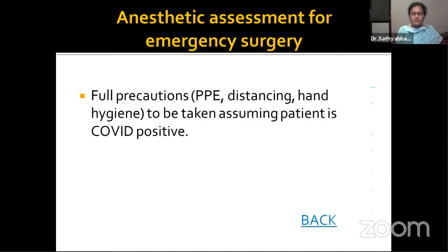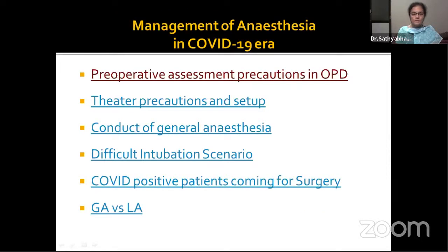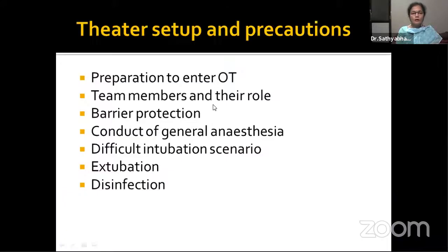The pre-anesthesia checkup for emergency surgery patients is done with full precautions because of the absence of a COVID report. COVID test should be done along with basic investigations in emergency cases. Now that the patient has been assessed and surgery scheduled, we move on to theater setup and precautions. The anesthesia team should enter the OT only after donning PPE. Only the anesthesia team should be present in the OT until the patient is anesthetized. The patient should wear a three-ply surgical mask during transfer from ward to OT.